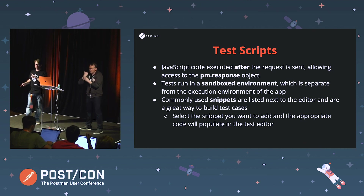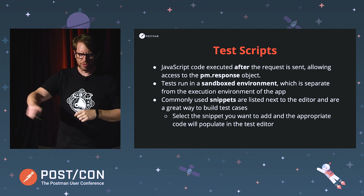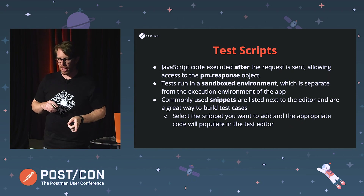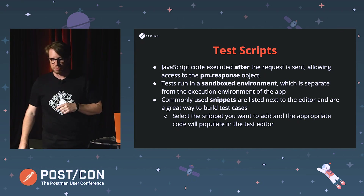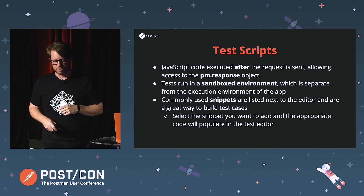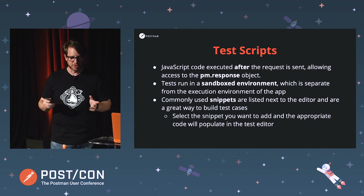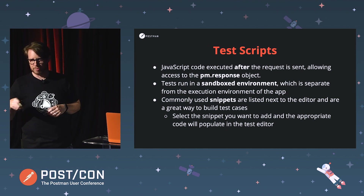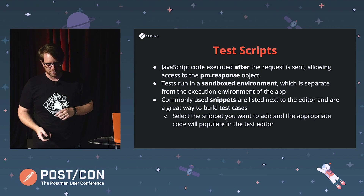So next, let's move on to test scripts, which are very similar to the pre-request scripts. This is just basically JavaScript code that's executed in the test tab. They run in a sandbox environment, so it's not the same as the application's execution environment. You can also use snippets to quickly build some common tests. You can run and add as many tests as needed, depending on how many things you want to test for specifically. Postman will run these tests after you execute your request every time.